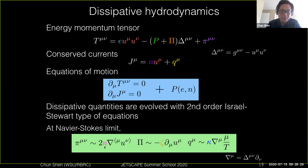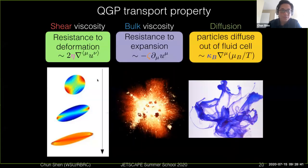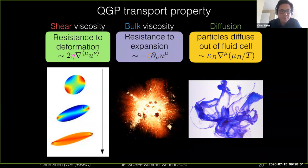On an intuitive level, you can think of all the viscous pressures evolving towards their Navier-Stokes limit. What shear viscosity does is basically resist the deformation of the system. If your system has flow gradients in different directions, it will tear the system into a different shape, and the shear viscosity will help resist the system from becoming more eccentric or anisotropic.